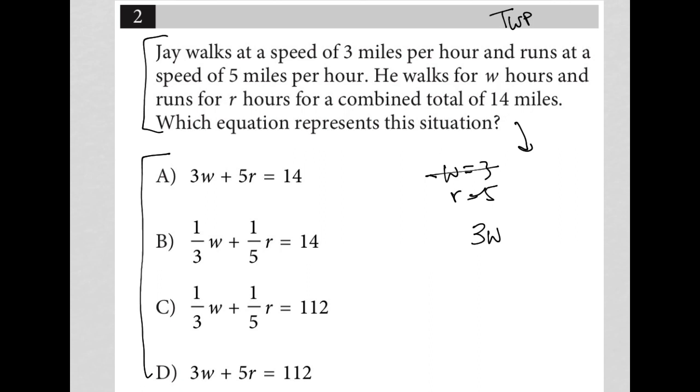So three miles per hour times W hours, and runs for R. So we know that he's running at five miles per hour. So 5R would represent how far he's running for a total of 14 miles.